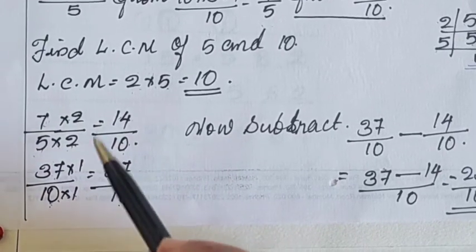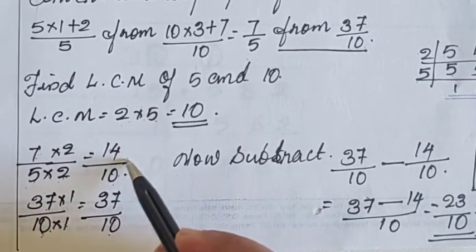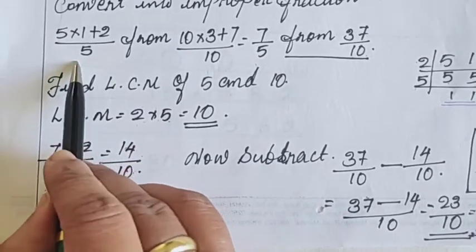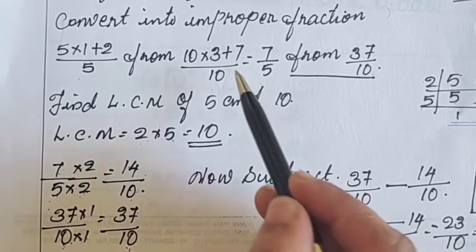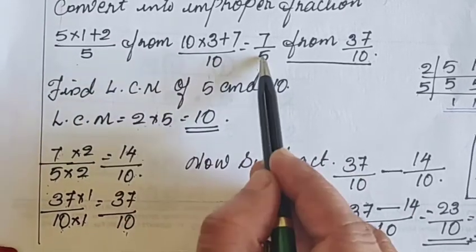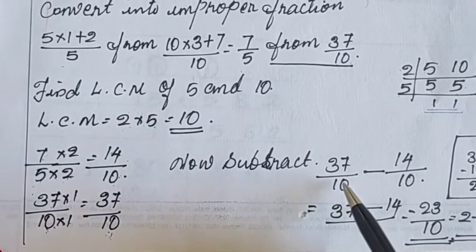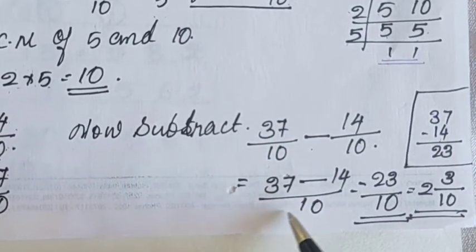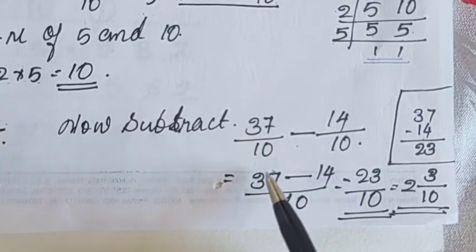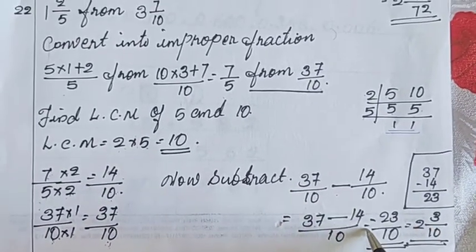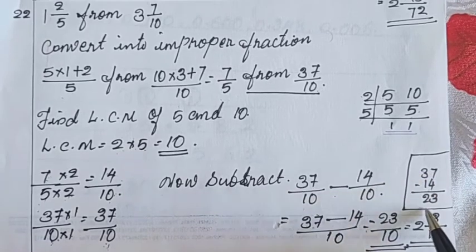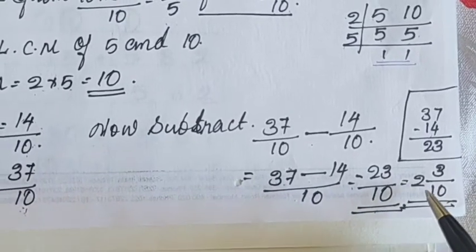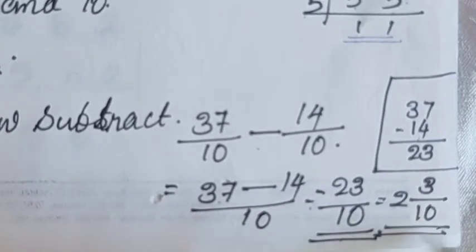Now subtract. 14 by 10 and 37 by 10. This 7 by 5 is the first number and 37 by 10 is the second number. So from the after number we have to take first. So 37 by 10 would be the first number. 37 by 10 minus 14 upon 10. And take denominators are common and numerators 37 minus 14 is equal to 23. 23 by 10. This is an improper fraction. We can convert into mixed one. 2 integer 3 upon 10 answer.